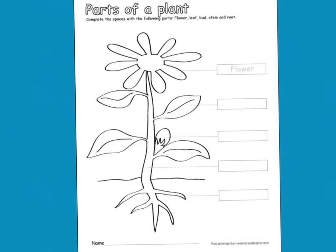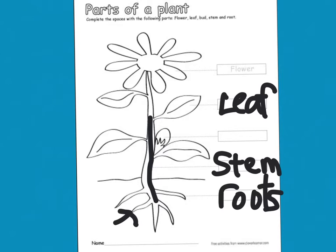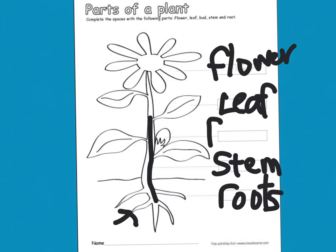Now we're going to point out what the different parts of the plant are. So the first thing that we see are the roots. And the roots go up through the stem. Here are the roots, and it goes up through the stem to the leaves, where the sun finds it. And it makes the flower.